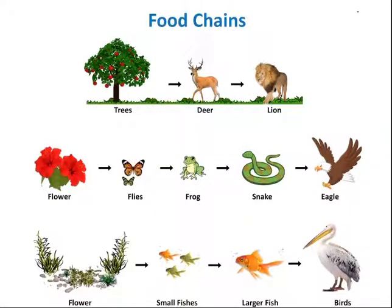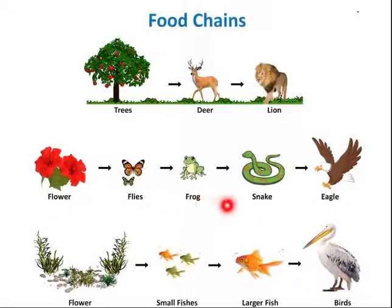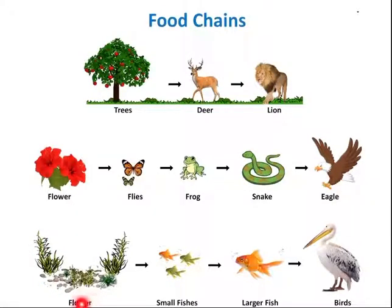In another food chain: nectar is sucked from flowers by butterflies or flies, the butterfly is eaten by a frog, the frog is eaten by a snake, and the snake is eaten by an eagle. In a pond food chain: flowers are eaten by small fish, small fish are eaten by larger fish, and larger fish are eaten by birds. Essentially, every living being depends on another for its food.